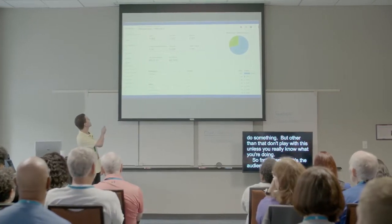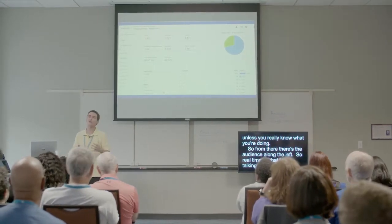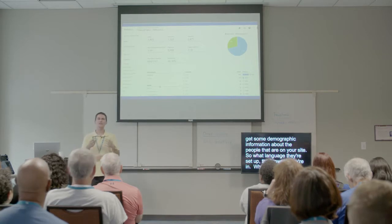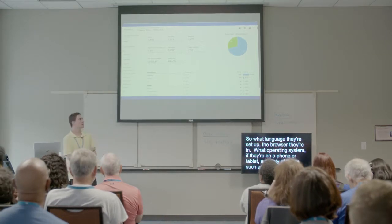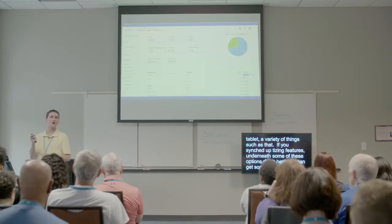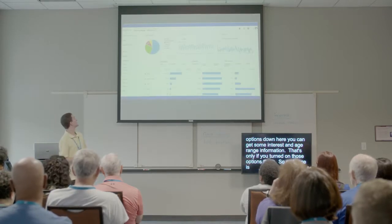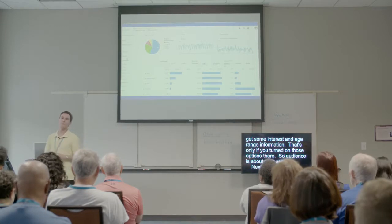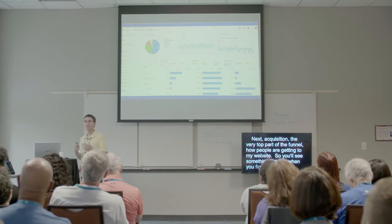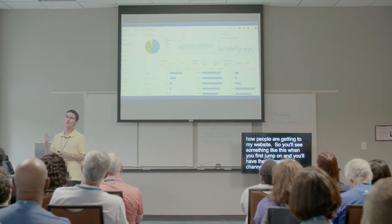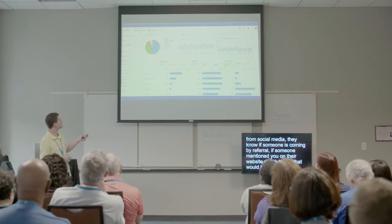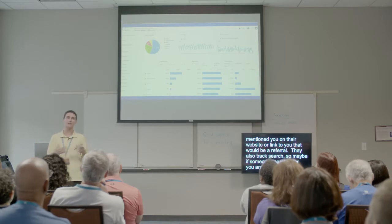Underneath real-time is audience. In there you can get demographic information about the people on your site — what language their browsers are set to, what operating systems, if they're on a phone or tablet. If you've synced up advertising features, you could even get interest and age range information. Next is acquisition — that's the top part of the funnel, how people are getting to your website. Google knows if traffic is coming from social media, referral, or search.